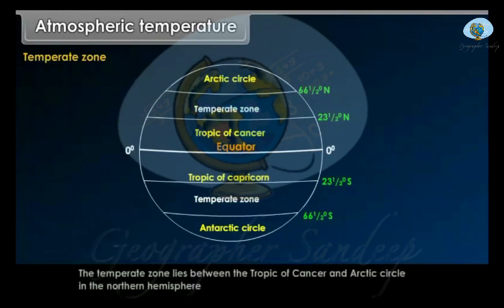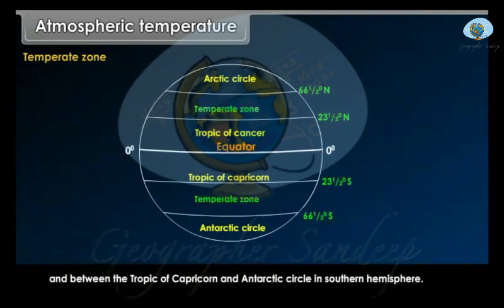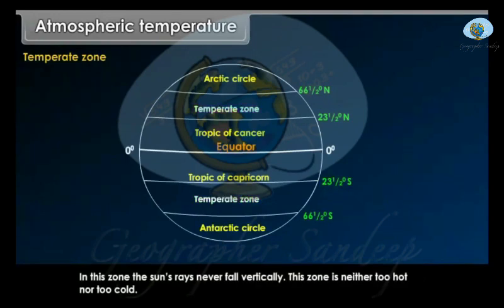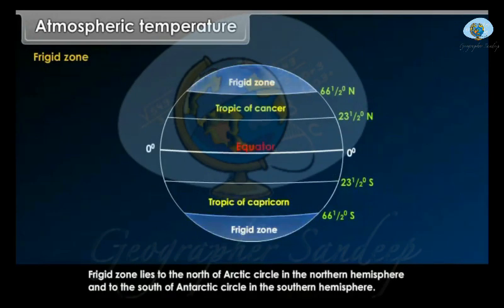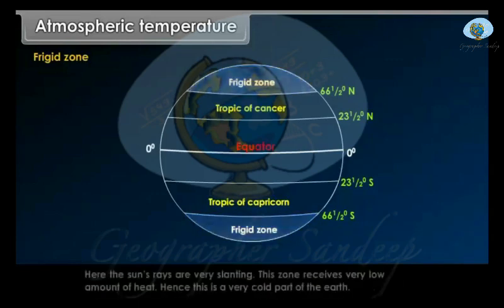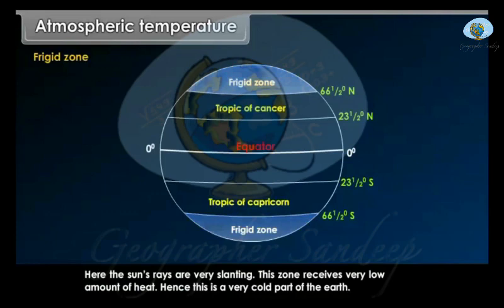The Temperate Zone lies between the Tropic of Cancer and Arctic Circle in the northern hemisphere, and between the Tropic of Capricorn and Antarctic Circle in the southern hemisphere. In this zone, the sun's rays never fall vertically, and it is neither too hot nor too cold. The Frigid Zone lies to the north of the Arctic Circle in the northern hemisphere and to the south of the Antarctic Circle in the southern hemisphere. Here, the sun's rays are very slanting, this zone receives very low amounts of heat, and hence it is a very cold part of the earth.